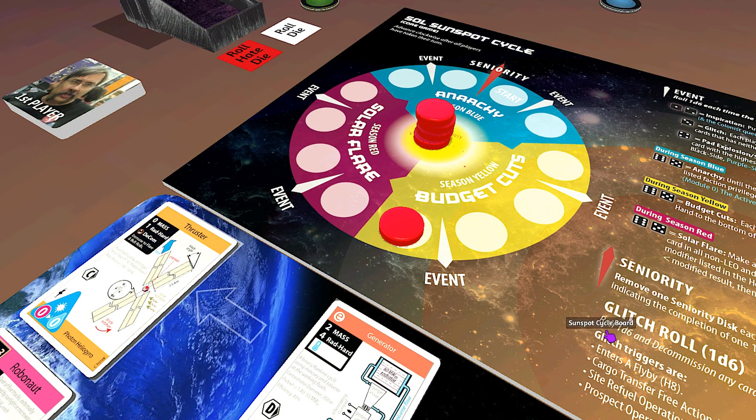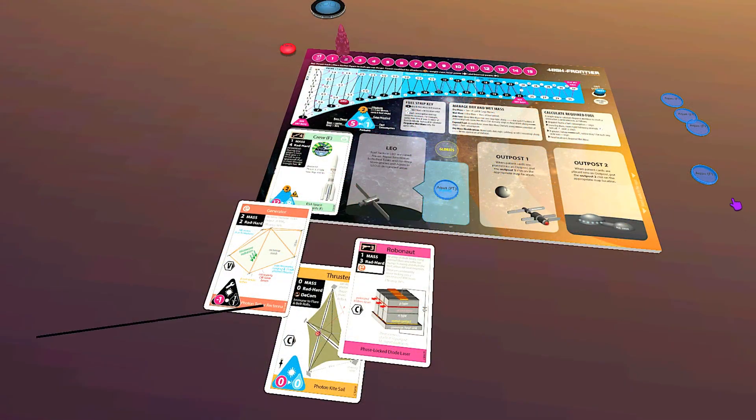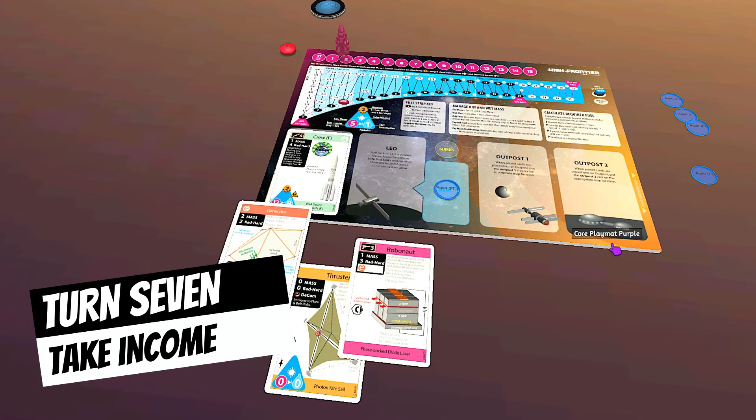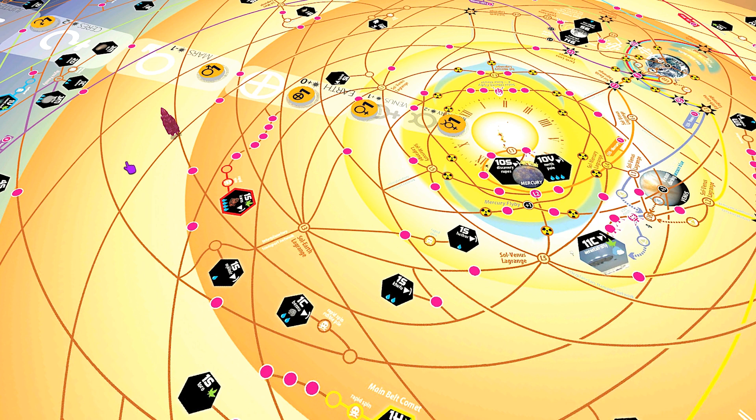The sunspot cycle moves into the season red zone. For my operation I will simply take another aqua. For the next move of my rocket, I pass through the burn space and I reach the Sol-Venus Lagrange point.